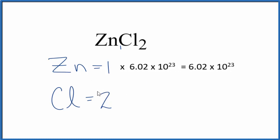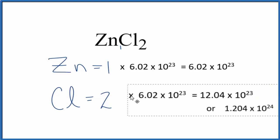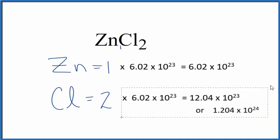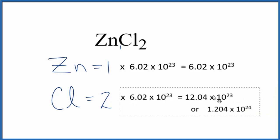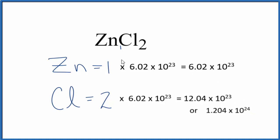For the chlorine, if we want to know how many chlorine atoms we have in one mole, we take two, we multiply that by Avogadro's number, and that tells us the number of chlorine atoms in one mole of ZnCl2.